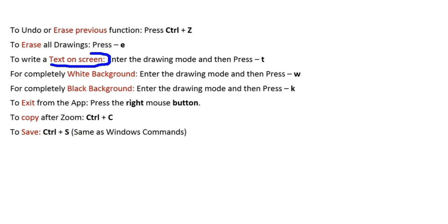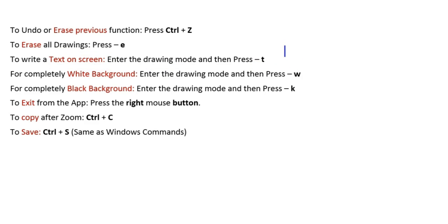To write text on the screen, enter the drawing mode and then press T. Let's try that.